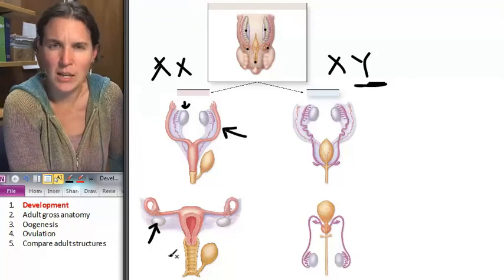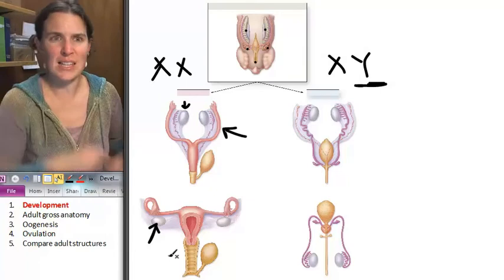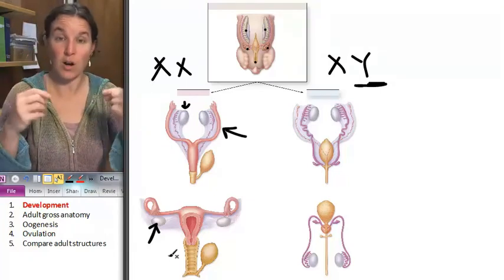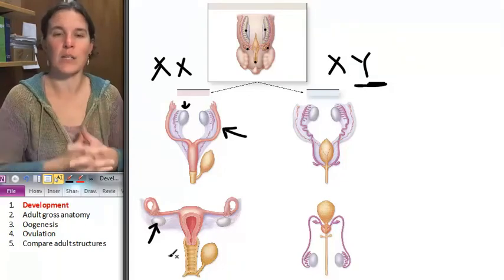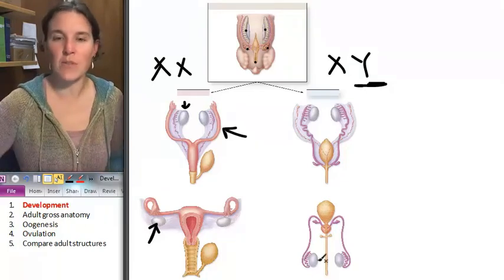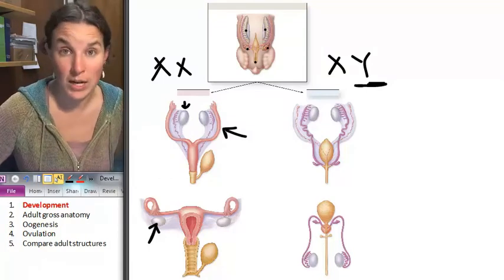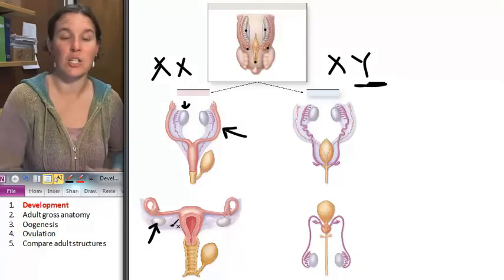Remember that structure, the gubernaculum, that is like this little ligament that shrinks and it moves our gonads around in our body. The fellas have the gubernaculum that actually pulls the gonad fully out of the body. That's pretty cool and interesting. But the ladies still have it adjusted.